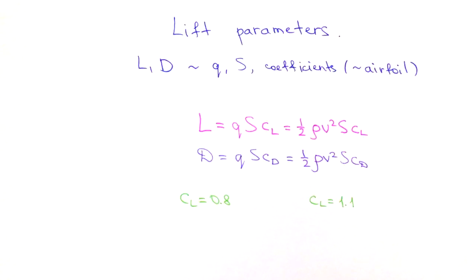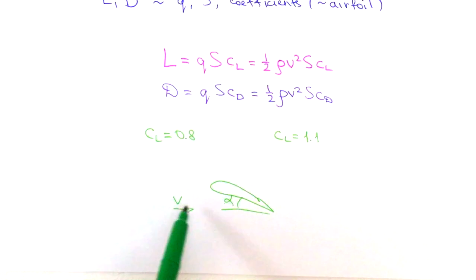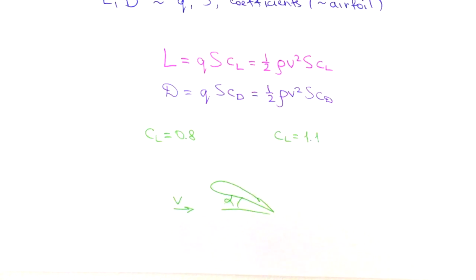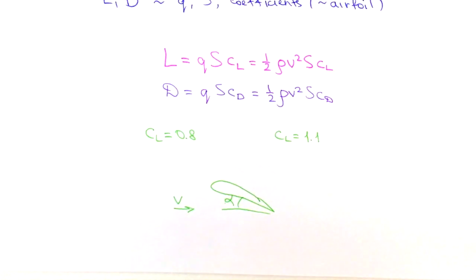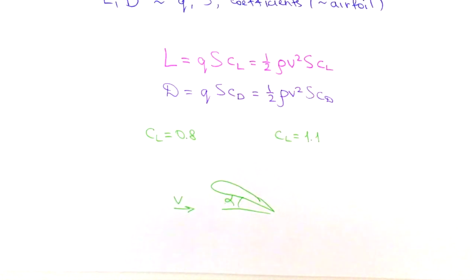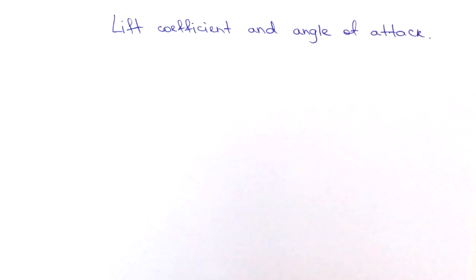Lift and drag coefficients depend on Mach and Reynolds numbers, and also on the angle of attack of the aircraft. Recall from an earlier video: the angle of attack alpha is the angle between the free stream velocity vector and the chord of the airfoil. For all existing aircraft these coefficients have been calculated, but for a new airfoil you would need wind tunnel testing. A good rule of thumb is that the drag coefficient should be about 10 times smaller than the lift coefficient — we don't want a lot of drag when generating a lot of lift.